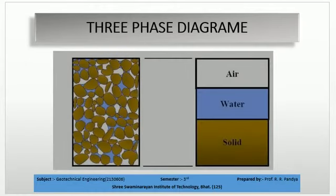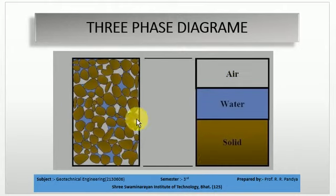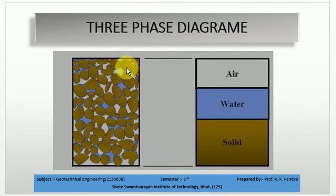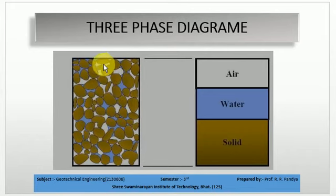Next, see the three-phase diagram. It will look like this — you can see soil solids with too many air voids, where some voids are filled with water and others contain air content.